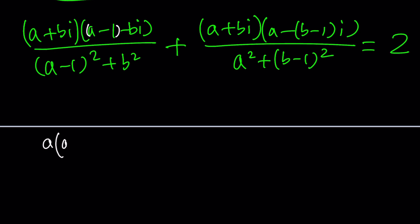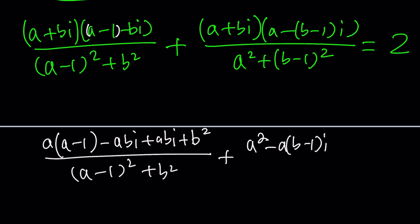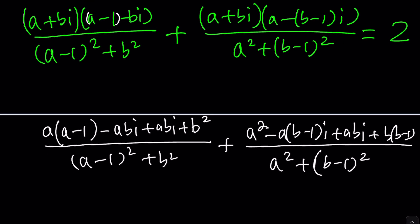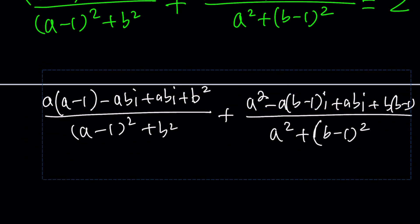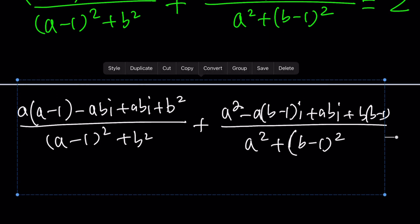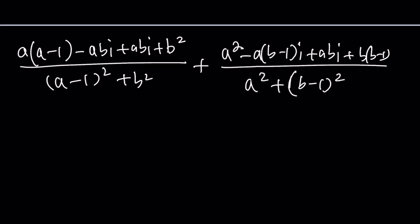A times A minus 1 minus ABI plus ABI. And then minus B squared I squared, which is plus B squared divided by A minus 1 quantity squared plus B squared. And then here A times A is A squared. And then minus A times B minus 1 I. And then plus ABI. And then finally plus B times B minus 1. Or you could write it as B squared minus B. Same idea. We should probably move things a little bit to the left. Let's try one more time. I want to move things to the left a little bit so that you can see it. And also, if I need to, I can simplify things.